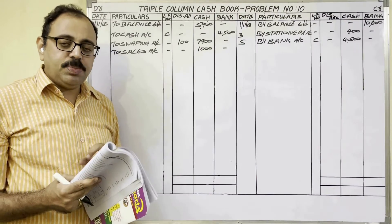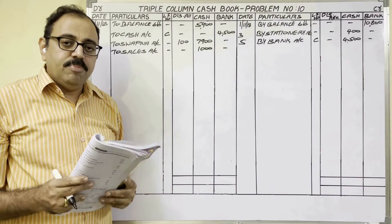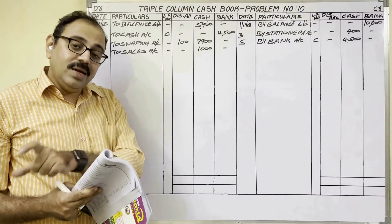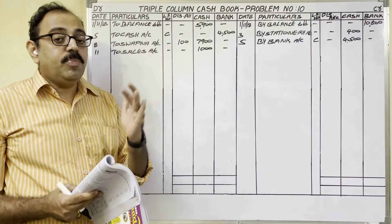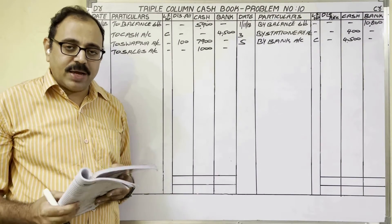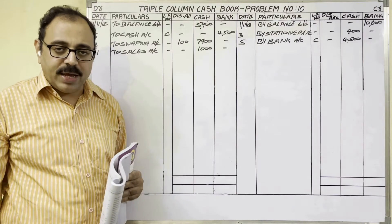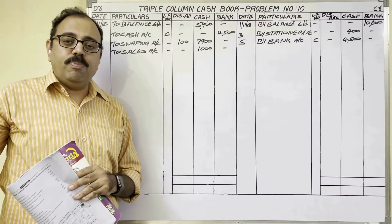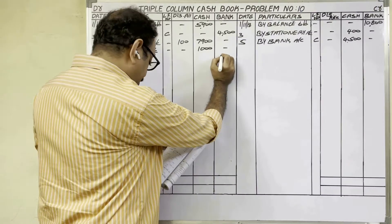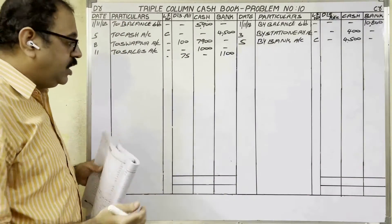When a check comes from Sravanti, the firm should go to Sravanti's bank, present the check, and collect the money. But since many checks come daily, the firm deposits all checks in its own bank, and collecting and crediting the money is the firm's banker's duty. When the check is received on the 13th and deposited on the same day, we assume the bank collected the money on the same day — so bank balance is increasing. Therefore, debit side bank column: 1,100 rupees, discount column: 75 rupees. In particulars, write 'to Sravanti account.'